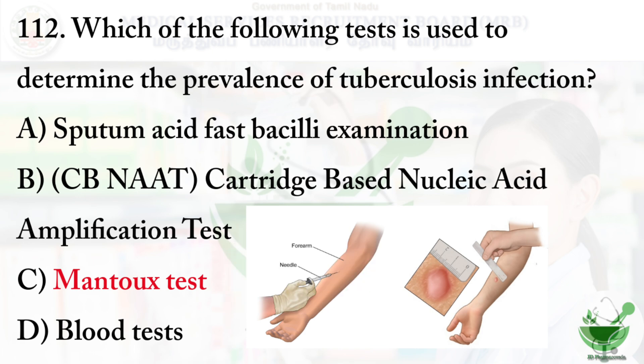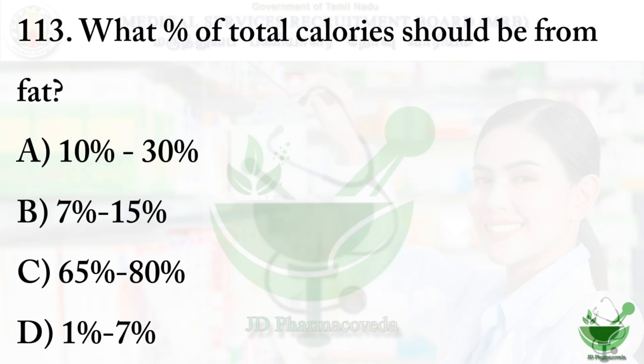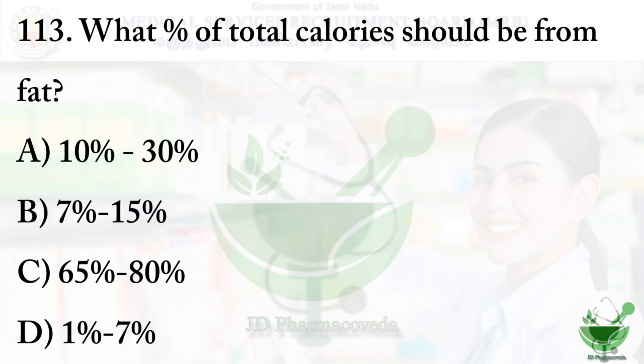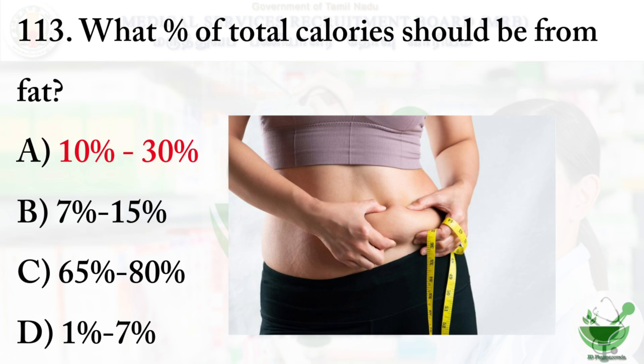Question 113: What percentage of total calories should be from fat? Option A: 10 to 30%. Option B: 7 to 15%. Option C: 65 to 80%. Option D: 1 to 7%. The right option is option A, 10 to 30%.